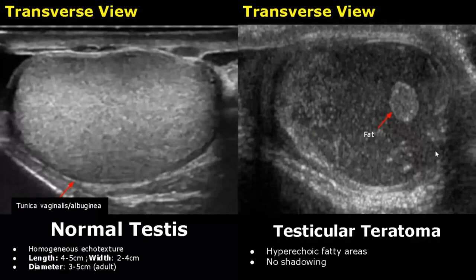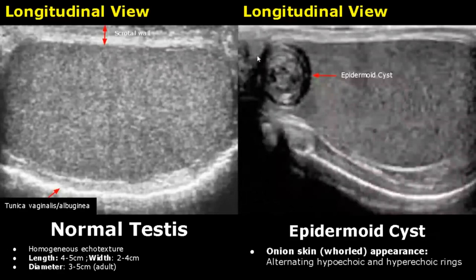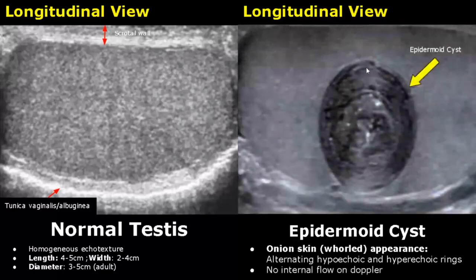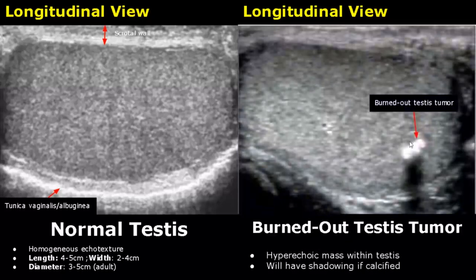A teratoma can have variable appearances. An epidermoid cyst is a rare benign tumor with an onion-skin appearance consisting of alternating hypoechoic and hyperechoic rings. It will not have any internal flow on Doppler. A burned-out testis tumor appears as a hyperechoic mass within the testis, usually calcified with posterior acoustic shadowing. It is malignant.